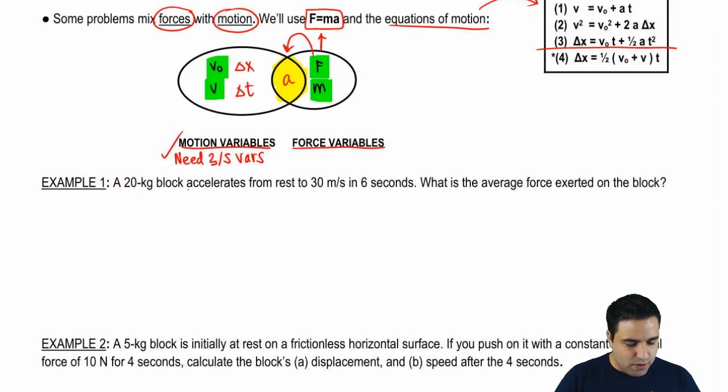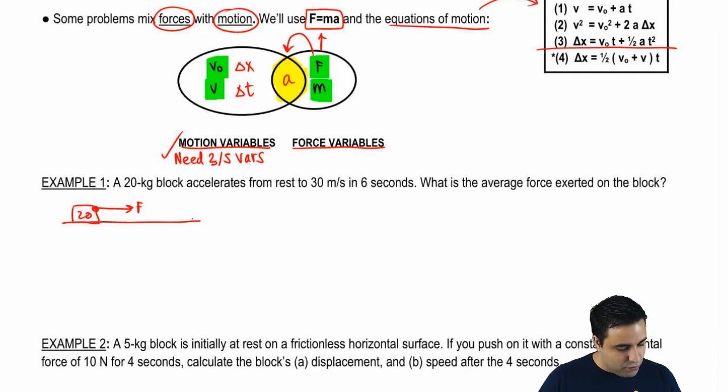So it says a 20 kilogram block accelerates from rest to 30 meters per second in six seconds. So I'm going to draw a little 20 kilogram block. It accelerates, so there must be a force pushing it, because I know from F equals ma that if I have an acceleration, I have to have a force. And it's being pulled that way. And it goes from an initial velocity of zero to a velocity of 30 in just six seconds. And I want to know, what is the average force exerted on the block?